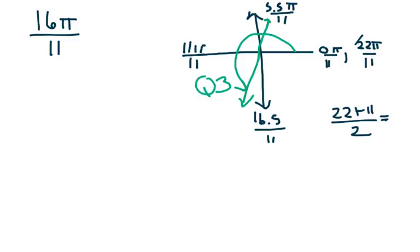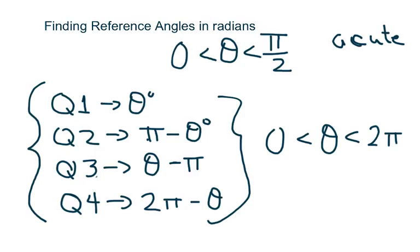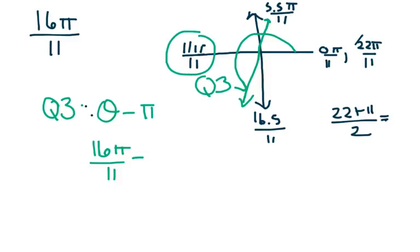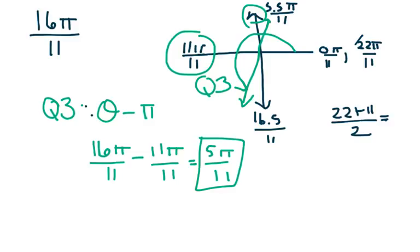Since we're in quadrant 3, I use the formula theta minus pi. So 16 pi over 11 minus pi — converting pi to 11 pi over 11 — gives me 5 pi over 11. That makes sense because we were off by a half, and 5 pi over 11 is very close to pi over 2. So 5 pi over 11 is the reference angle.